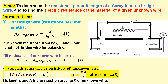We use the resistance box on one side and the unknown wire on the other side. If the known resistance x is on the left side, we note the balancing condition from the left as L1. Then we interchange the two sides and again measure the balancing condition, that is L2.